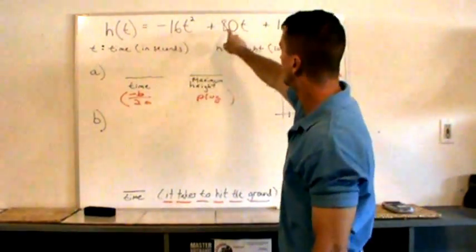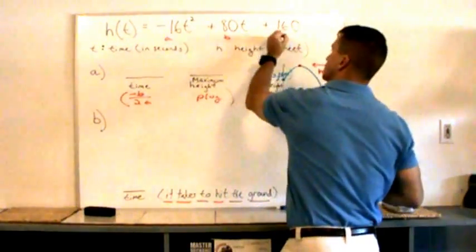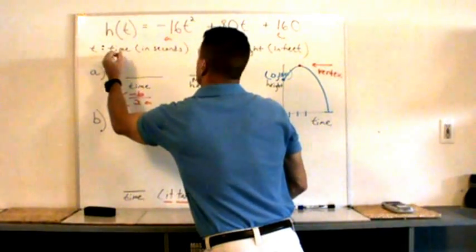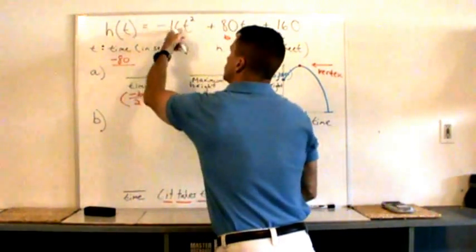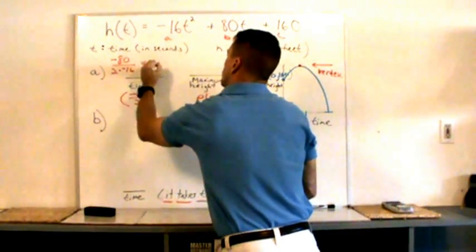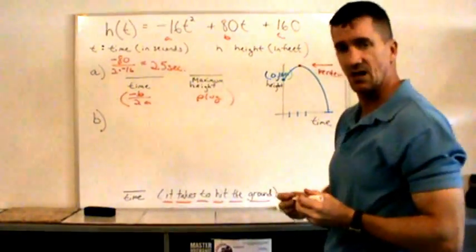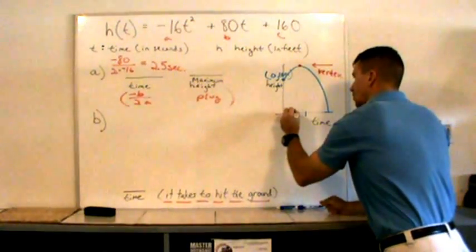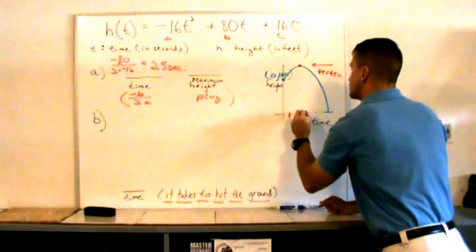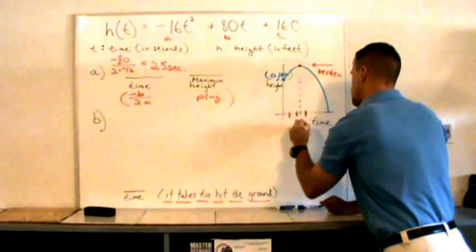So I'm going to plug in negative b over 2a. That's a, that's b, that's c. Here, you're a, you're b, you're c. So what's negative b over 2a? What's negative 80 over 2 times negative 16? And I get 2.5 seconds. That's how long it takes. So to be very specific, one, two, and about two and a half seconds. This is at 2.5 seconds.